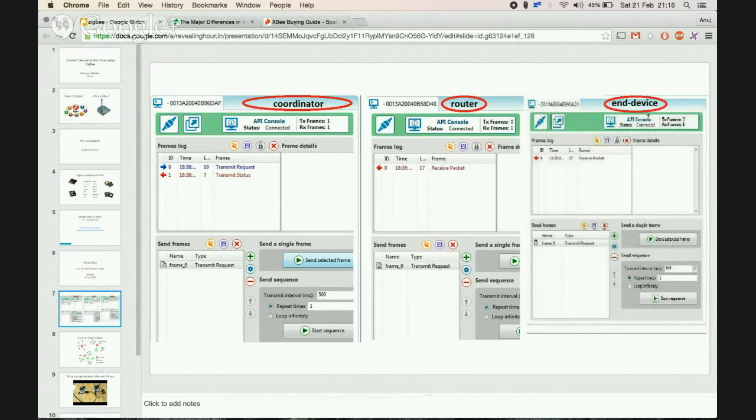Whenever there's a transmit request sent from the coordinator, you see that the router receives it, the end device receives it, and there's also a transmit status that is gotten back on the coordinator which tells us that the packet has been received.